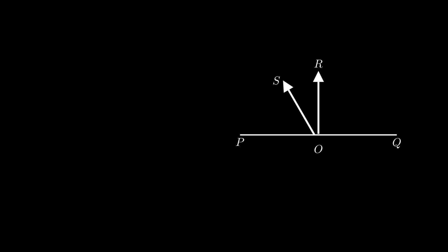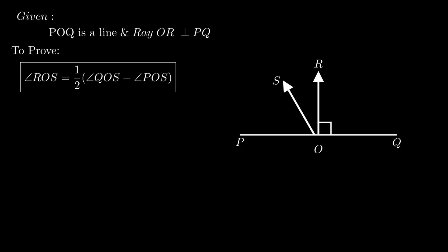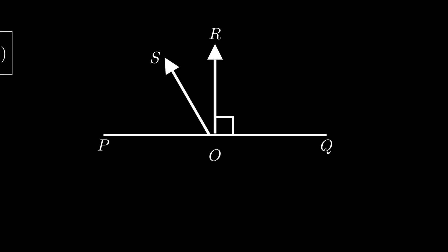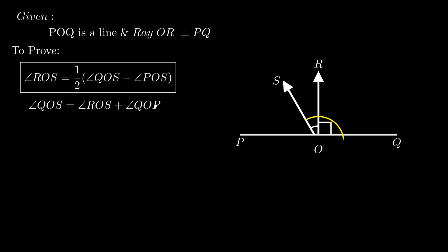Moving on to the next problem, which is one of the most important problems from exercise 6.1. The problem states that POQ is a line and ray OR is perpendicular to line segment PQ. We need to prove that angle ROS equals half of the quantity angle QOS minus angle POS. From the figure, ROS is a part of angle QOS, therefore angle QOS can be written as the sum of angle ROS and angle QOR. As angle QOR equals 90 degrees, angle QOS becomes angle ROS plus 90 degrees.